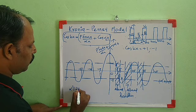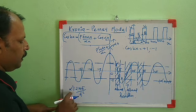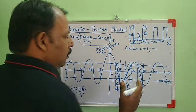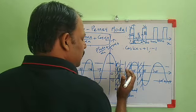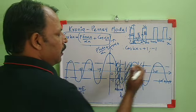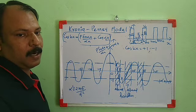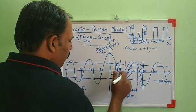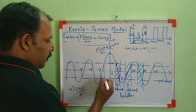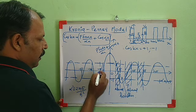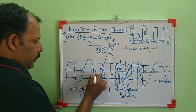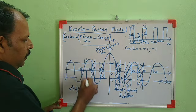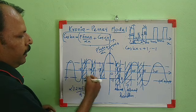Since α² = 2mE/ℏ², a restriction on α values implies a restriction on energy values. That means not all energy values are possible. There are ranges of energy possible for the electron and ranges that are not possible. The forbidden energy bands are called energy gaps. On both the positive and negative αa sides, there are alternating allowed and forbidden regions.